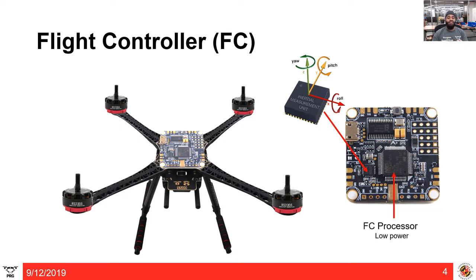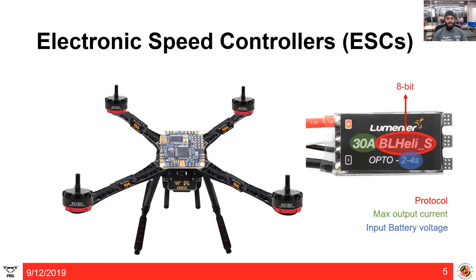You need a special type of interface called Electronic Speed Controllers, or ESCs, which convert the commands into RPM — revolutions per minute. ESCs are very powerful components that connect your controller and your motors. They take the signal from your flight controller and power from your battery to make your motors spin. Each ESC has a protocol — in this case BL Heli S — a maximum output current of 30 amperes, and an input voltage range of 2 to 4 cell.